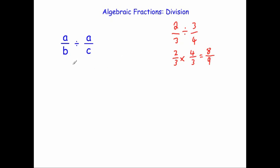We're going to use the same technique for algebraic fractions. We've got a over b and we multiply that by the reciprocal of the second fraction, which is c over a. I could cancel before I multiply — cancel the a in the numerator with the a in the denominator — or just multiply to get ac over ab and then cancel the a's to get c over b.